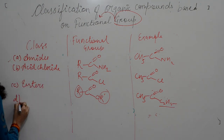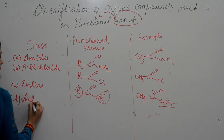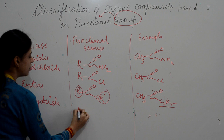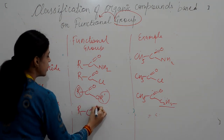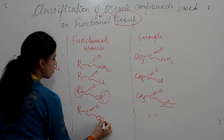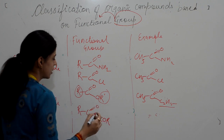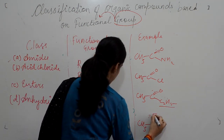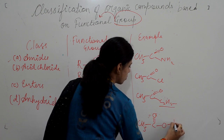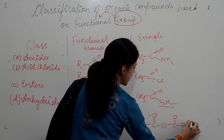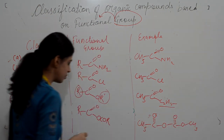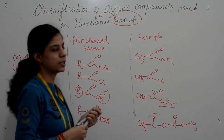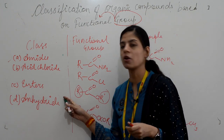The fourth derivative is acid anhydride. In acid anhydride, the OH group is replaced by an O-C(=O)-R group. The example is CH3-C(=O)-O-C(=O)-OCH3, which is acetic anhydride. So these are the four derivatives of carboxylic acid.